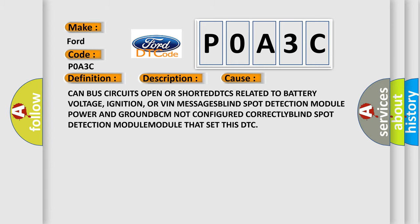CAN bus circuits open or shorted; DTCs related to battery voltage, ignition, or VIN messages; blind spot detection module power and ground; BCM not configured correctly; blind spot detection module that set this DTC.